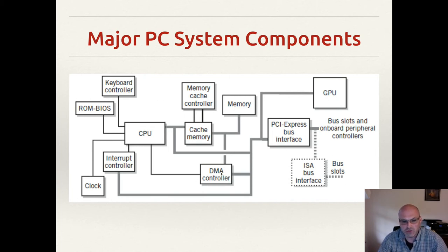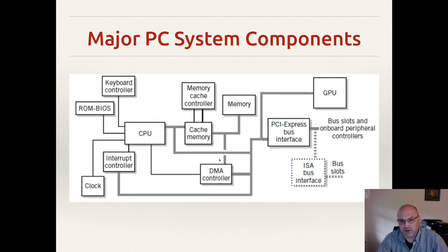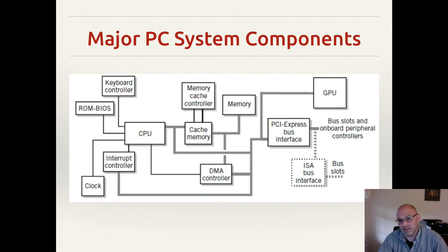The DMA controller is a direct memory access controller — a chip that manages the interface between the CPU and the I/O and memory bus. The DMA controller sits on the bus between memory and the PCI Express bus, which connects to all of our I/O. We're going to get into more detail on what the PCI Express bus looks like.